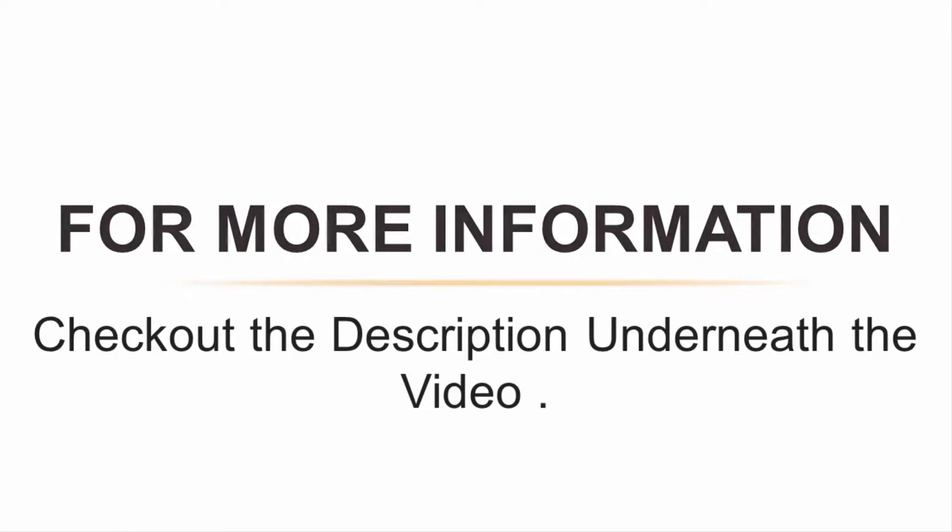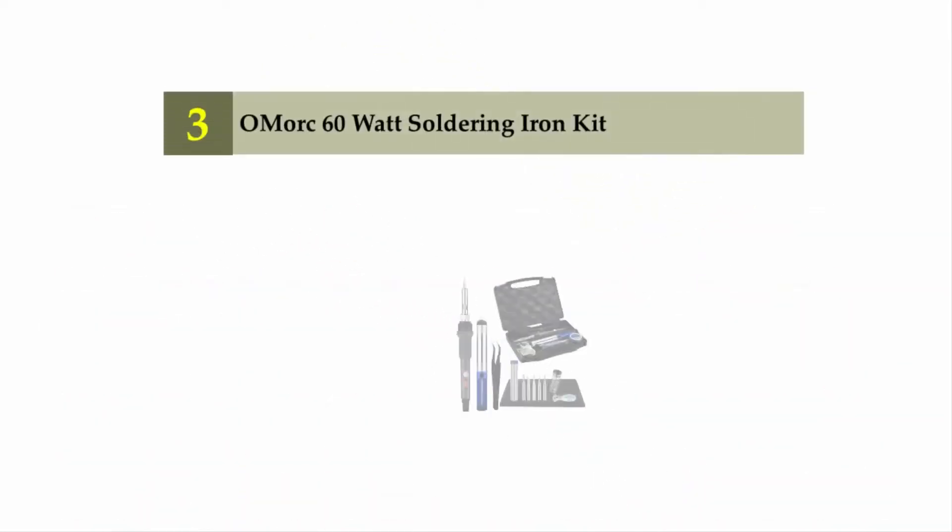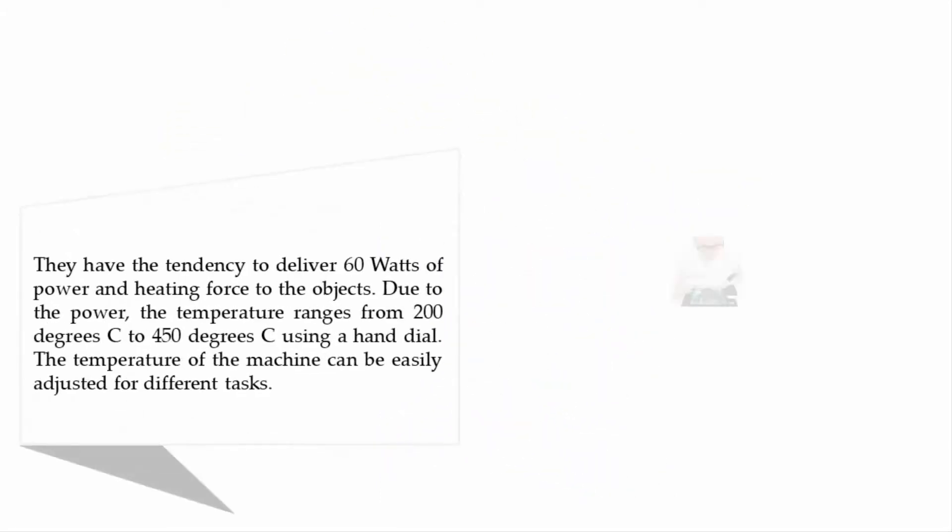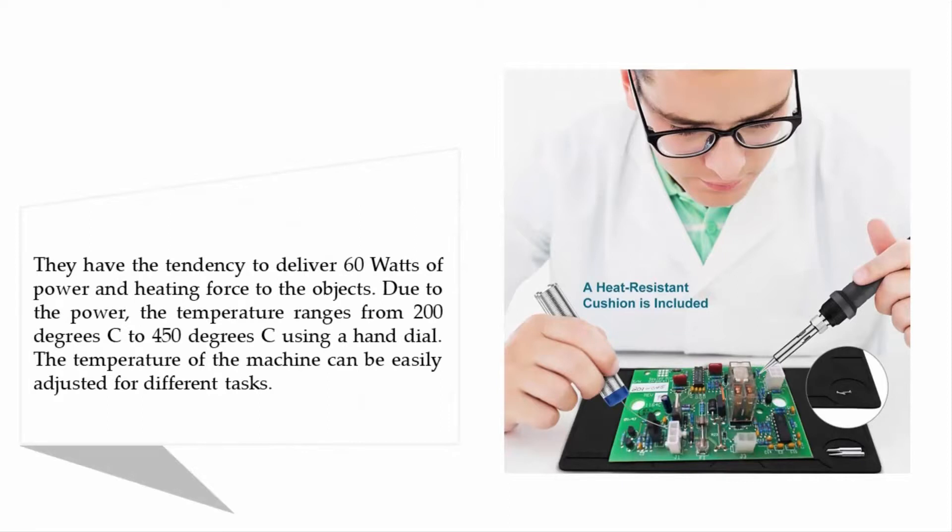Halfway through our list at number three: OMORC 60 watts soldering iron kit. They have the tendency to deliver 60 watts of power and heating force to the objects. Due to the power, the temperature ranges from 200 degrees Celsius to 450 degrees Celsius. Using a hand dial, the temperature of the machine can be easily adjusted for different tasks.